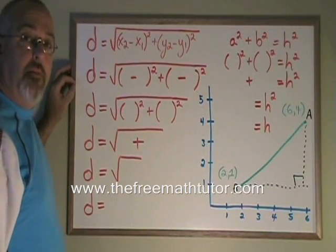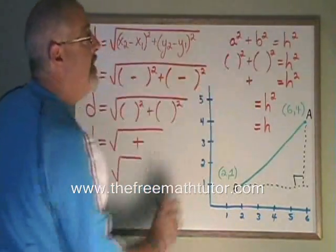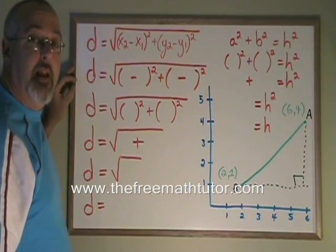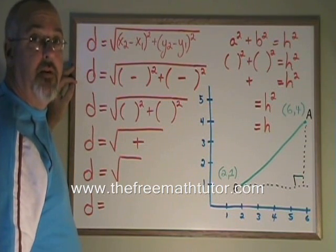The distance formula is derived from Pythagoras theorem, which I have up here. Pythagoras theorem, of course, is used to find the length of a side in a right triangle when you know the lengths of the other two sides.